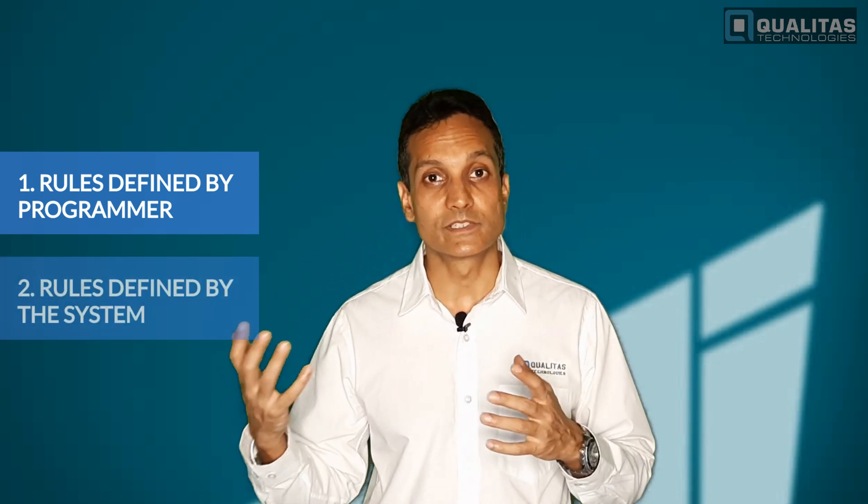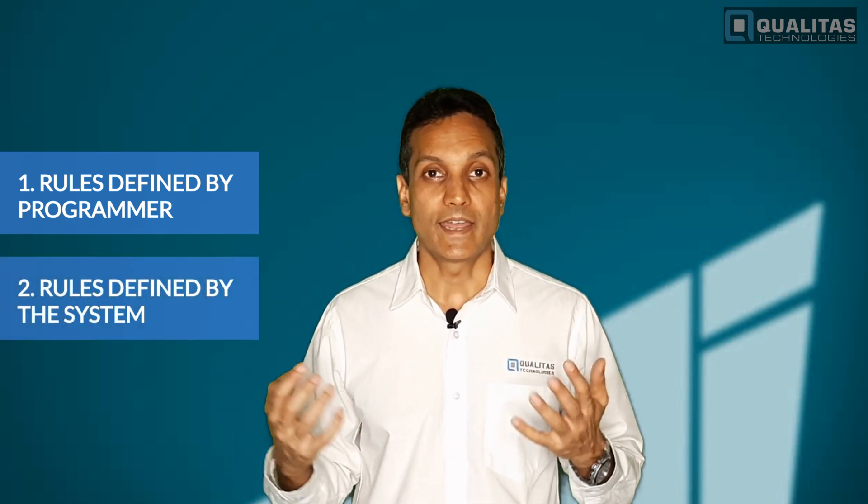So there you have it: two different approaches to machine vision software computation. One where the rules are defined by the programmer, and the other where the rules are defined by the system — where the machine learns. And that's what makes this a game-changing technology, because the complexity of teaching is completely lowered and the barrier to teach these systems is much lower than before, making things which were very complex before a simple teaching process through example. Hope you took some value out of this video, and I urge you to take a look at AI and machine learning as a possible solution for your next machine vision project. Thank you.